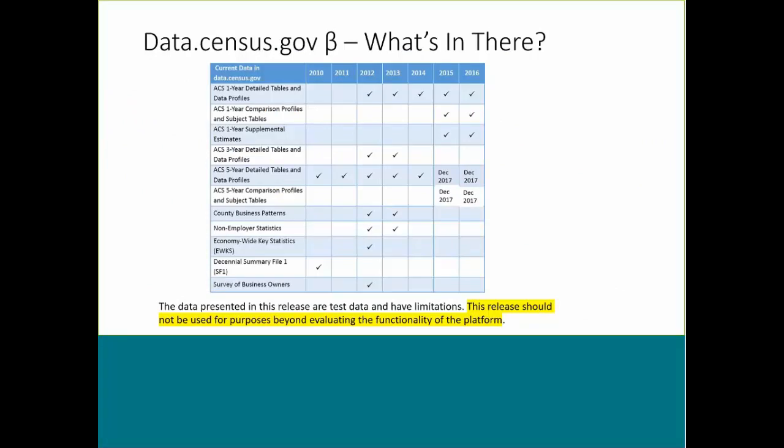So what's in the test system? Out of 11 elements, six of them are related to American Community Survey data. That's really where they're focusing the development — American FactFinder is primarily used to access the American Community Survey, and so those are the data they're testing for the first migrated tool. They do have a big warning: everything in here is test data and should only be used for purposes of evaluating functionality.